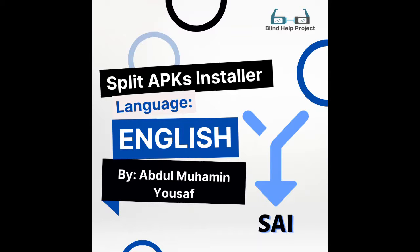In this video I'll talk about something important. As you have noticed, many of the applications and games in Android are now shared in the extension called APKS. You might have wondered what an APKS file is. An APKS file is the combination of two or more APK files, and we will discuss how to install this extension on your Android phone.